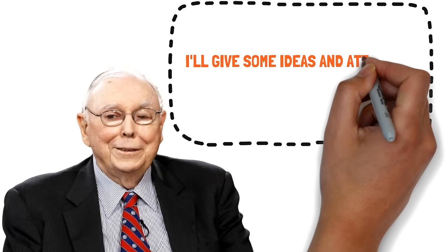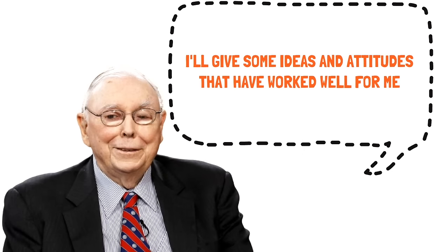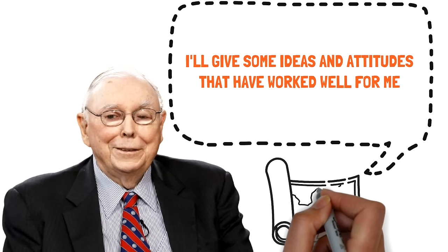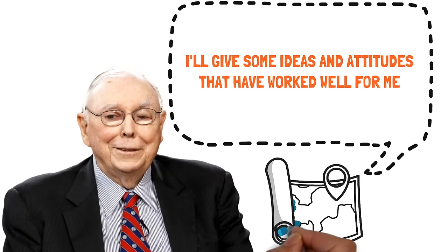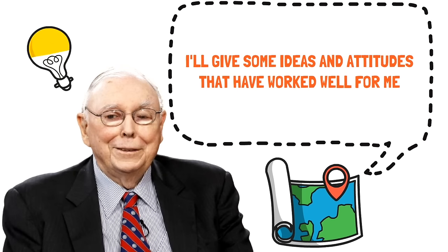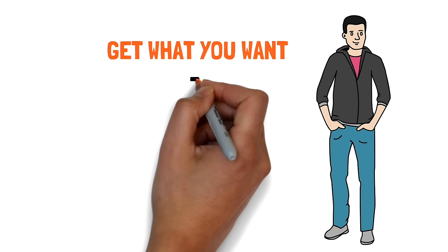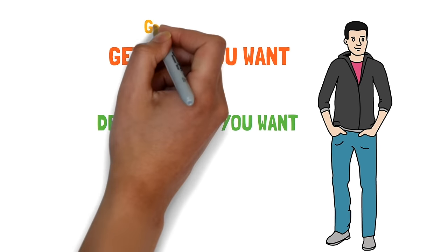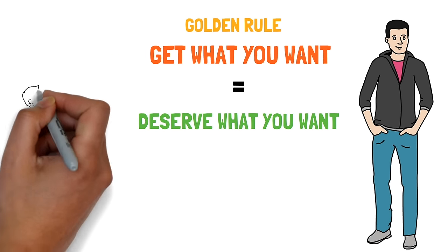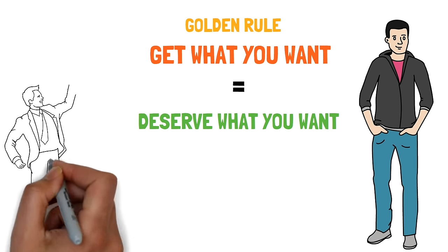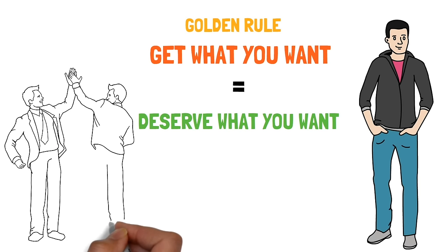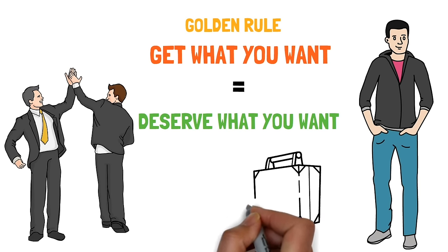I'm going to try and just give an account of some ideas and attitudes that have worked well for me. I don't claim that they're perfect for everybody, although I think many of them are pretty close to universal values, and many of them are can't-fail ideas. What are the core ideas that have helped me? Well, luckily, I got, at a very early age, the idea that the safest way to try and get what you want is to try and deserve what you want. It's such a simple idea. It's the golden rule, so to speak. You want to deliver to the world what you would buy if you were on the other end. And there is no ethos, in my opinion, that is better for any lawyer or any other person to have.